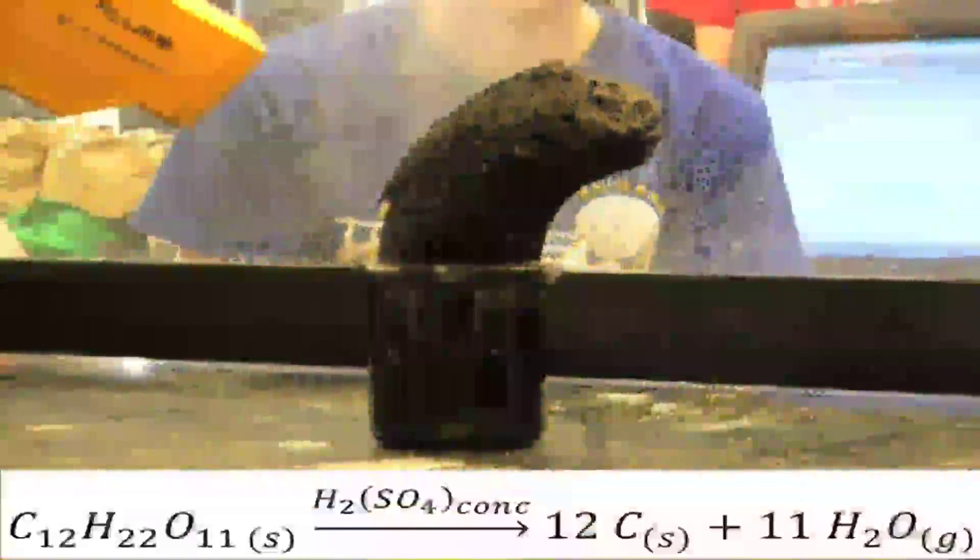You can see the reaction equation on the screen, and the sugar we started out with has completely decomposed into solid carbon and water vapor. The acid is still there because it's not consumed as part of this reaction, but instead mixes with some of the water and doesn't escape the carbon mass.